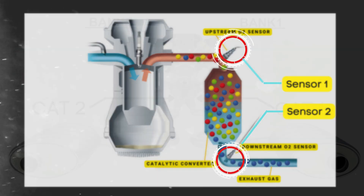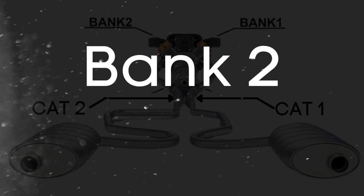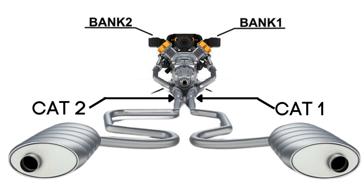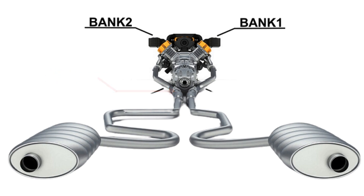So when we talk about bank 2, sensor 1, we're focusing on the oxygen sensor that's upstream on the opposite side of the engine where cylinder 1 is located.